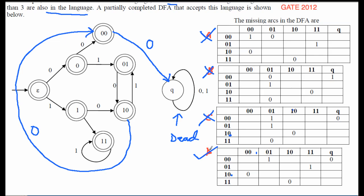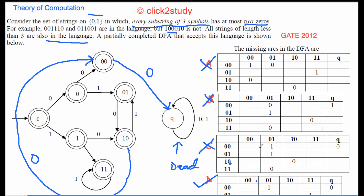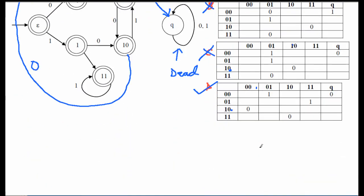Option D is the correct choice. The key insight is that you don't need to determine all the arcs — you can eliminate wrong options step by step and arrive at the answer. If you complete all the arcs independently, you'll still arrive at option D.